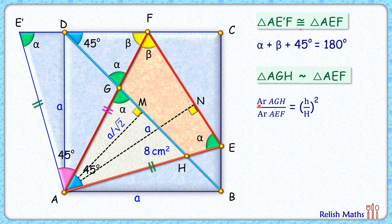So putting these values here: area AGH is given as 8 centimeters squared, this small h is A by root 2, capital H is A. Solving it, both numerator and denominator, A is getting cancelled out, so this will be 1 by root 2, and square of it will be 1 by 2. Simplifying, we get the area of triangle AEF, the full triangle area, is 16 centimeters squared.